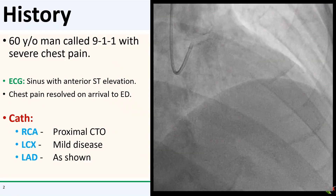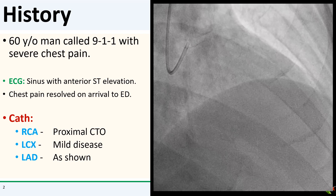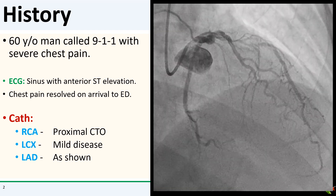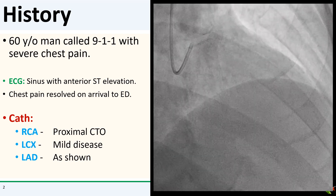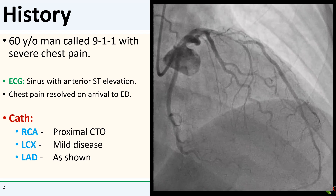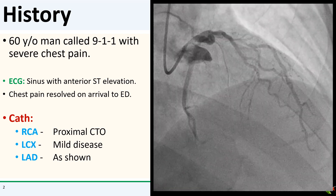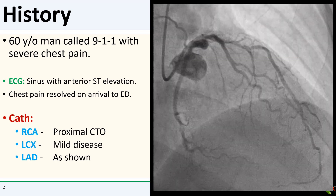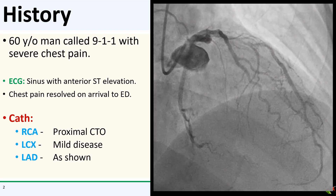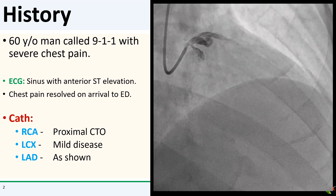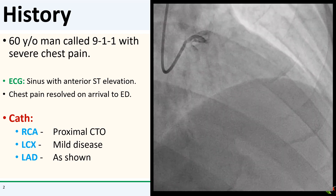The patient is a 60-year-old man who called 911 complaining of severe chest pain. When EMS got there, the ECG showed anterior ST elevations. His chest pain was actually already improving and was pretty much gone by the time he got to the ED. We took him up to the cath lab, and his cath showed a CTO of the proximal RCA, mild disease in the circumflex, and the culprit in the proximal LAD. The LAD had already recanalized, which explained his resolved chest pain. This was going to be a piece of cake.